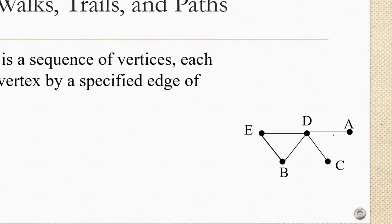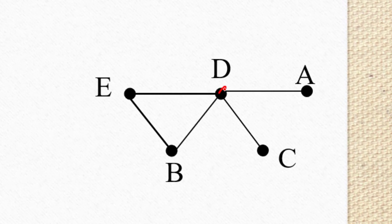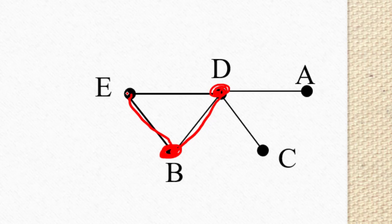We start at any vertex that we want. Let's say I want to start at vertex D, and then we travel across an edge to get to another vertex like B, and then we travel across another edge to get to E. We can go wherever we want. We can go back to B, back to D, over to A.